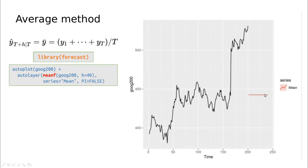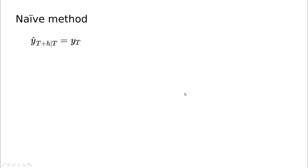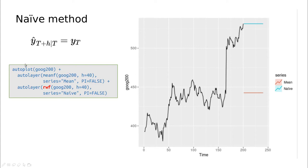The mean prediction is really poor because the mean value is not very representative of what has happened — you have these huge leaps in the data. Another method is the naive method, where all values in the future (the next h time steps) are the same as the last data point. You can add this as another layer — the random walk forecast — because we only take the last value and just jump up and down.